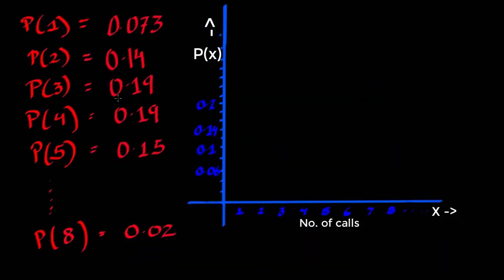Now that we have calculated the values, and I have calculated till five, then eight. So the probability of getting one call equals 0.07. So here I have 0.02 as one measurement. So 0.07 lies somewhere here.